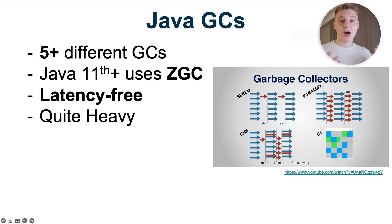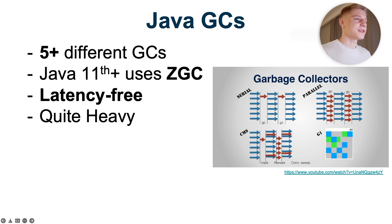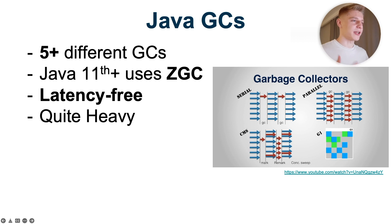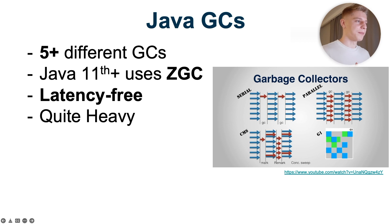Let's consider Java garbage collectors. Java has a bunch of garbage collectors, including the three-color mark and sweep. But from Java 11 onwards, it uses the Z Garbage Collector, which is latency-free. However, it's quite heavier than the garbage collector used in Golang.